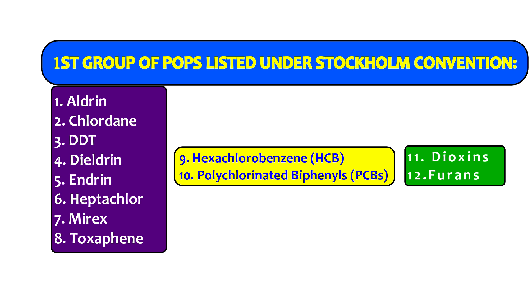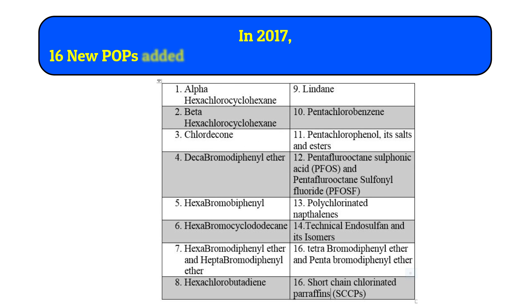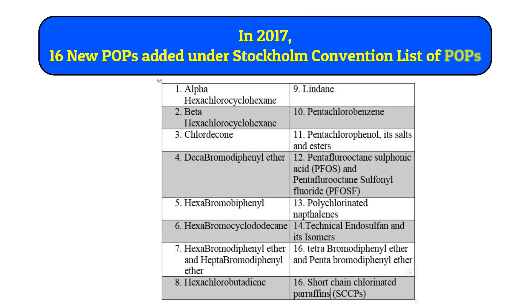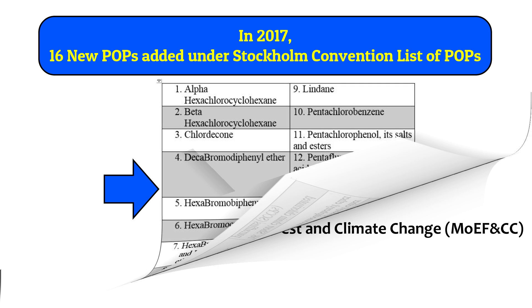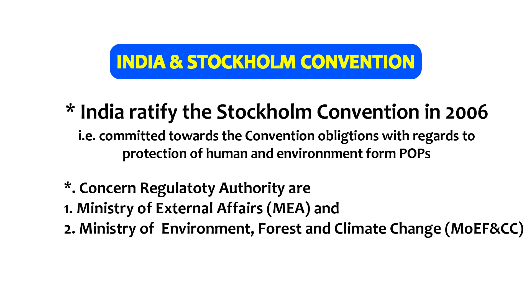These 12 chemicals, the dirty dozen, were the first group to be included under the Stockholm Convention on persistent organic pollutants. However, in the year 2017, 16 additional POPs were added to the Stockholm Convention list. If you're interested, you can read the names of the newly added POPs one by one.